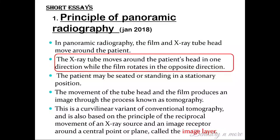The next question that can be asked as a short essay is the principle of a panoramic radiograph. You have to draw a diagram — you can refer from the textbook of oral radiology by White and Pharoah, which has a beautiful diagram. The principle of panoramic radiography is that the x-ray tube head as well as the film is moved around the patient, who remains stationary. The x-ray moves around the patient's head in one direction while the film rotates in the opposite direction, producing an image through the process of tomography. This curvilinear or conventional tomography is based on the principle of reciprocal forward movement of the x-ray source and image receptor around a central point or plane called the image layer.